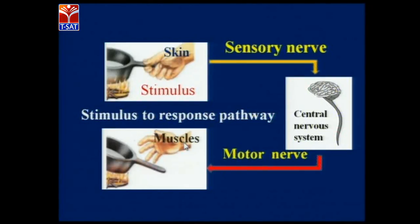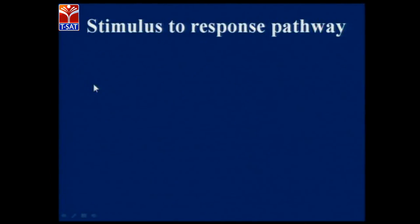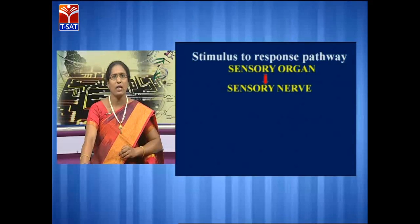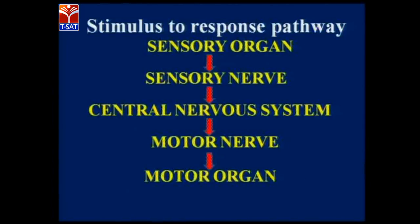The muscles in the hand will contract and release the hot handle, due to which we can escape from that dangerous stimulus. So, this releasing of the hand by muscle contraction is called a response. Here, the stimulus was hotness and we got rid of it through our response. This is how the stimulus-to-response pathway works. First, changes are received by the sensory organ, which generates a sensory impulse sent to the sensory nerve. The sensory nerve takes the information to the central nervous system, which analyzes it and generates a motor impulse given to the motor nerve, which carries the impulse to the motor organ or effector organ where the response is executed.